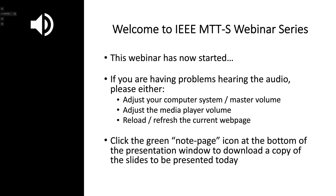Refresh or reload the current web page if you encounter any problems. With regards to audio, if you're listening over your computer speakers, you can adjust the media player volume. You may also need to adjust your speakers or your system's master volume. The icons at the bottom of the webinar window include a resource list — clicking that link will start the process to download copies of the slides.